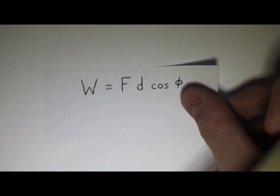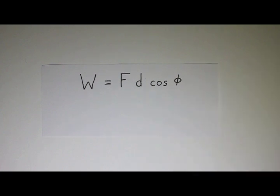Here is the definition of work. Work, which I'll use the letter W for—and you have to be careful because we also use W for weight, and work and weight are completely different things—but this is work. So work equals F times D times cosine of phi.